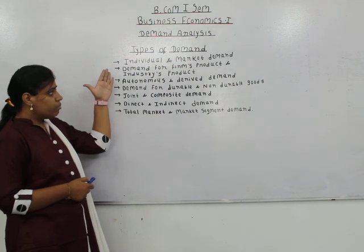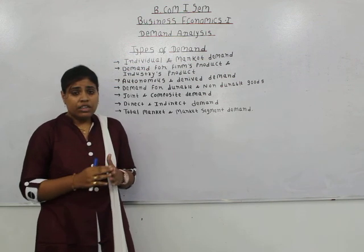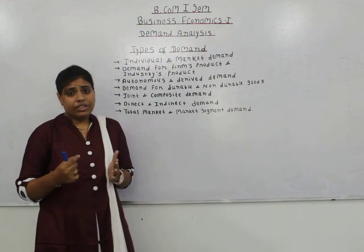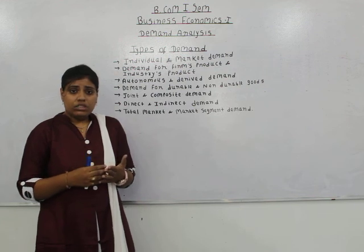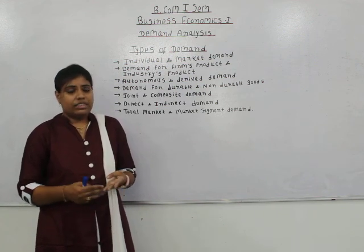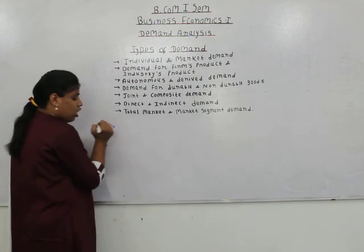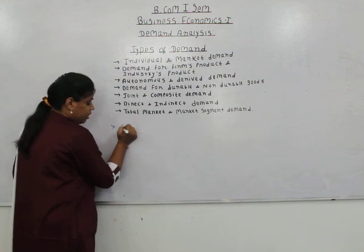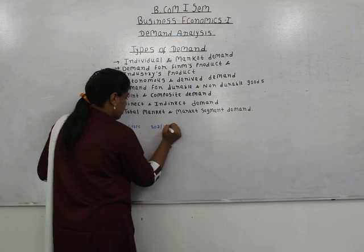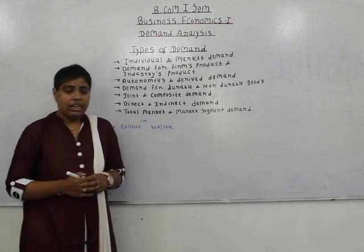The first type is individual demand and market demand. Individual demand is a demand for a particular product made by an individual at a particular price during a particular period of time, taking into account various factors like money income, tastes and preferences, prices of other related goods, etc. For example, Mr. X demands 50 litres of oil at 80 rupees per litre for one month — that is individual demand for oil.